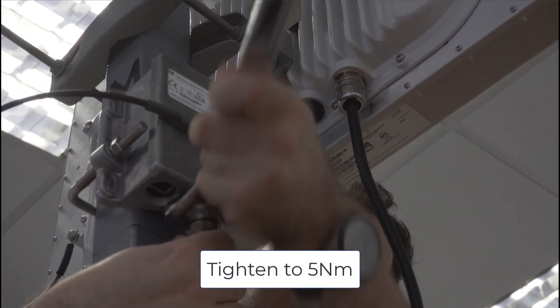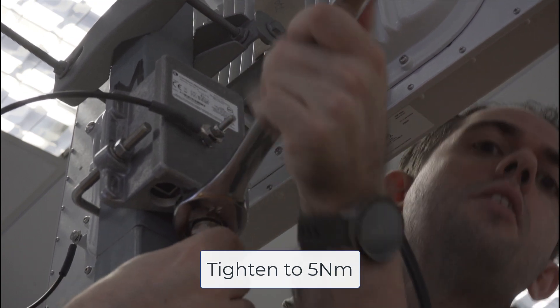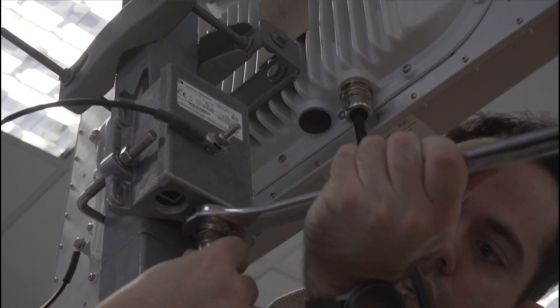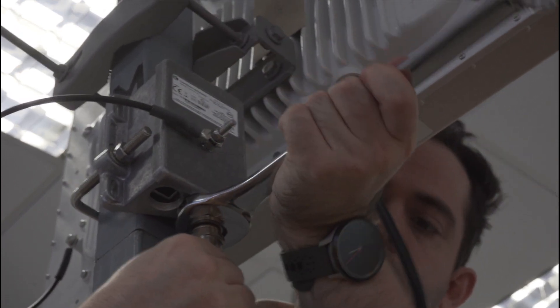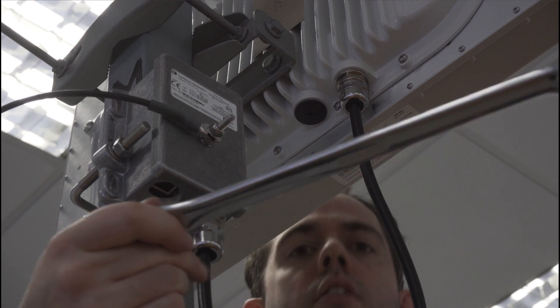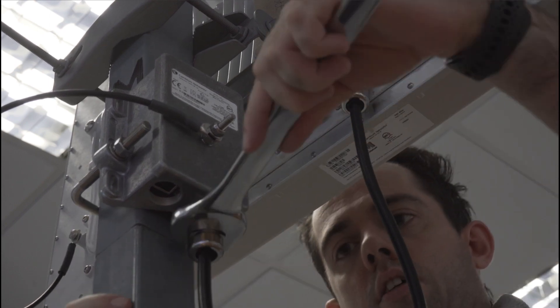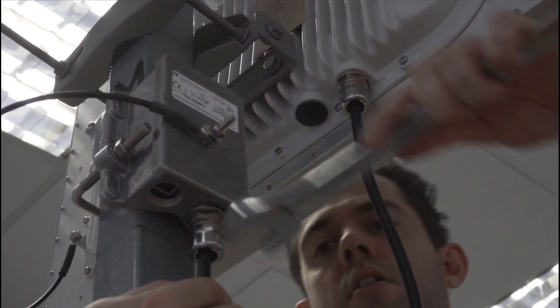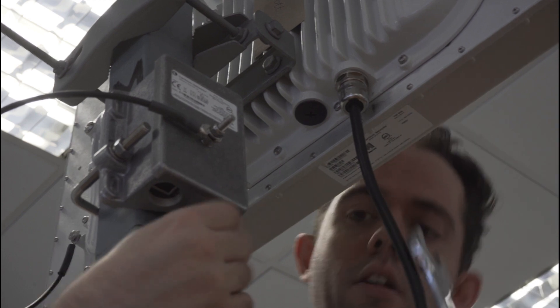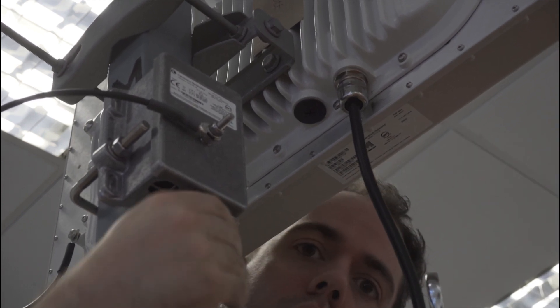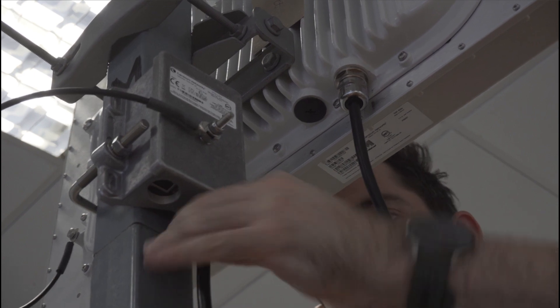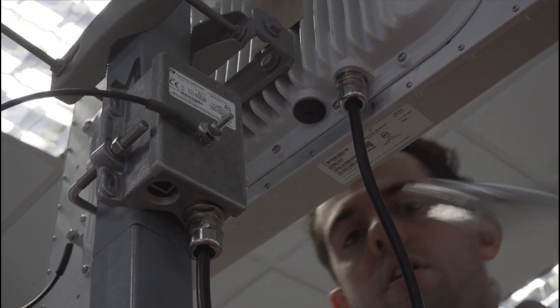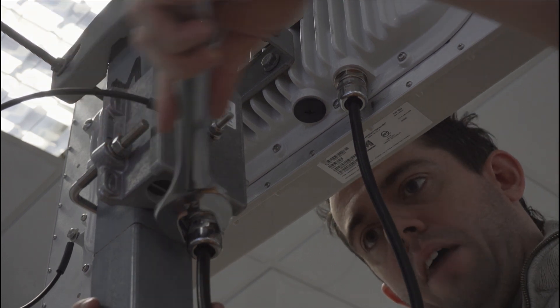Tighten the base to five newton meters, making sure that the cable doesn't twist. And then tighten the cap until the rubber insert is pushing through the cap.